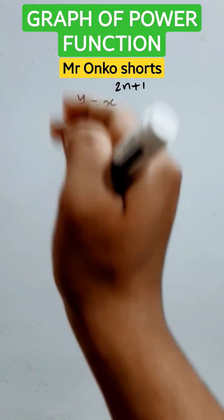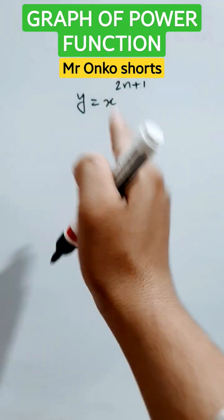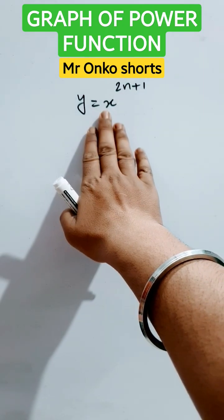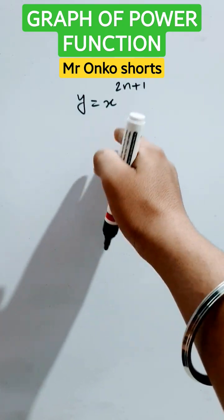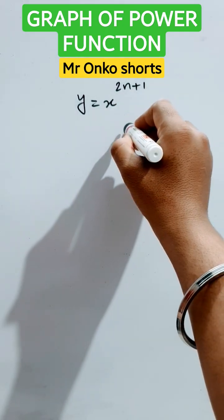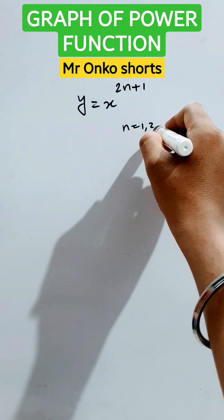Hello students, welcome to Mr. Onko Shorts. Today we will learn how to draw the graph of these types of power functions. This is an odd power function, since if we put n equals to 1, 2, 3, and so on, any natural number, we will get odd power functions.